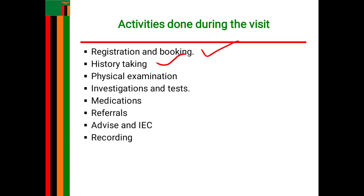Apart from family medical history, you also find out about personal medical history. Here you try to ascertain the previous health status of the pregnant woman. The conditions outlined in the family history are revisited, and the woman is asked about sexually transmitted infections, UTIs, hepatitis, and many others.